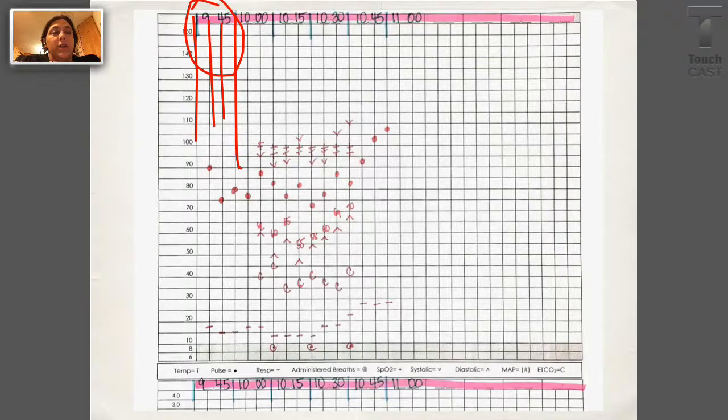If you started, if this procedure started at 950, you could still write 945 here. You would just count two over to when you start your charting. We gave it at 945, but we didn't start monitoring until 950, so that's what this is.